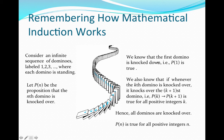Our basis case tells us how to knock over the first domino: we prove that P(1) is true, or that the first domino is knocked over. The inductive step tells us that whenever the kth domino is knocked over, it knocks over the k plus first domino. So we assume P(k) is true — that the kth domino is knocked over — and show how that causes the k plus first domino to be knocked over.